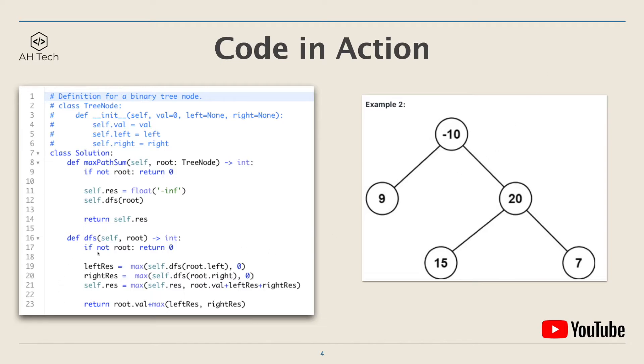And next is to try to update result, which is the maximum of result and current root value plus left result and right result. And another tricky part is the DFS function will return the value of the current root plus the maximum between left result and right result. And this will be more clear when we see it in the example.